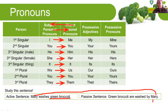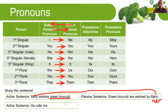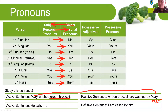We don't have a real change of pronouns here because we still use the name Mary as the object. But in another version of the sentence, we can use: Green broccoli are washed by her. We can use 'her' here. It's the same, but it's better to use Mary. Now look at the second sentence, which is more clearly demonstrating pronoun change: He calls me.